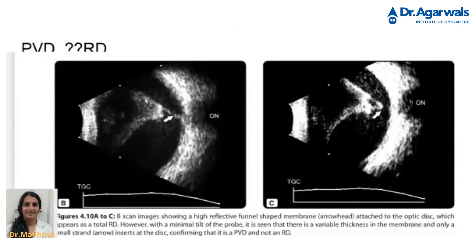This does look like a retinal detachment where you can see a tented membrane, but when we do a dynamic scan — asking the patient to move his eyes up or down — you can see that the thickness of the membrane is variable and only a small strand is attached to the disc. So this is a PVD and not an RD.